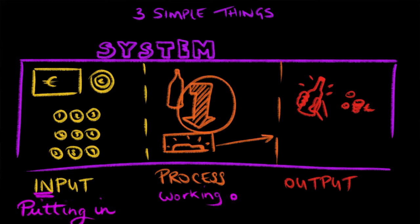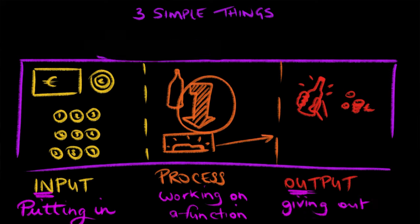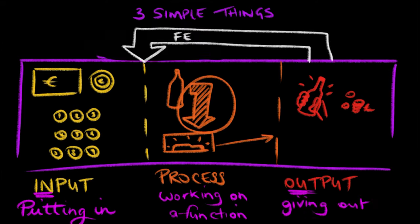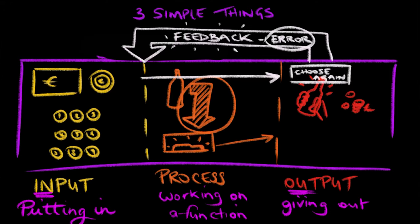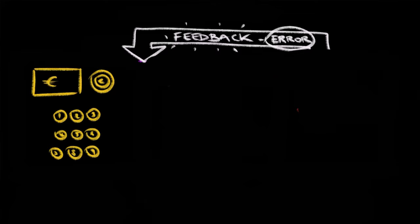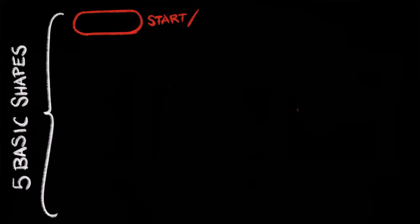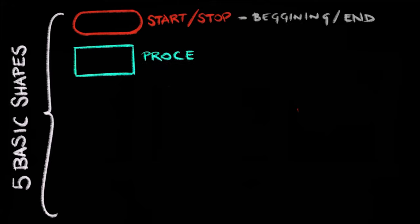An intelligent system would go one step further — it would have something extra called feedback. The feedback is when the system asks itself and reprocesses that new information. For example, an item got jammed inside the machine, so the machine will instruct itself that there has been an error and that it needs to ask the user to choose another option. This is one very simple way of graphically explaining a system; however, flowcharts are ways in which such systems can be explained more clearly and universally.